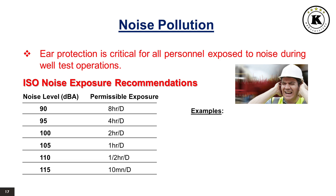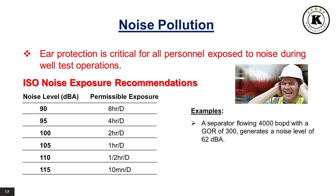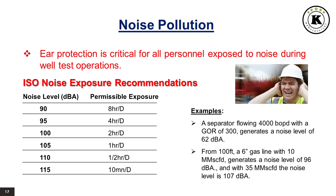For example: a separator flowing 4,000 barrels of oil per day with a GOR of 300 generates a noise level of 62 decibels. From 100 feet, a 6-inch gas line with 10 million standard cubic feet per day generates 96 decibels, and with 35 million standard cubic feet per day the noise level is 107 decibels.